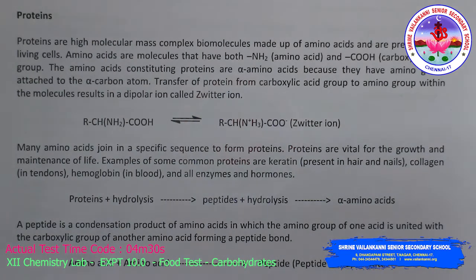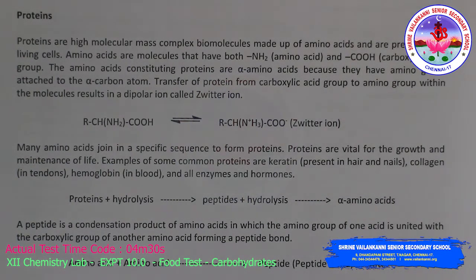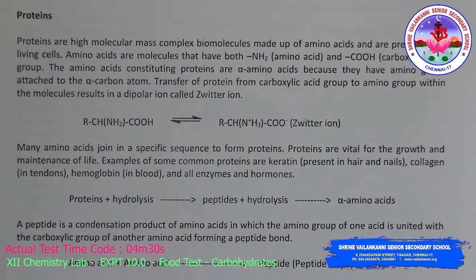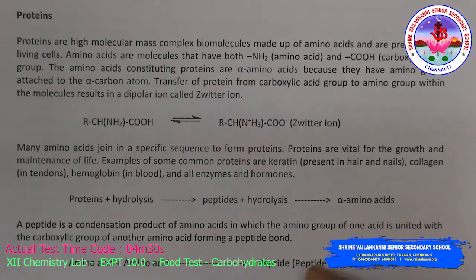Many amino acids join in a specific sequence to form proteins, which are vital for the growth and maintenance of life. Examples of common proteins include keratin (present in hair and nails), collagen, hemoglobin, enzymes, and hormones. Protein hydrolysis gives peptides; peptide bond hydrolysis gives alpha-amino acids. A peptide is a condensation product of alpha-amino acids in which the amino group of one acid is united with the carboxylic group of another, forming a peptide bond.